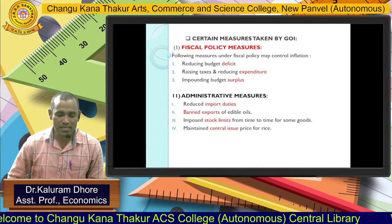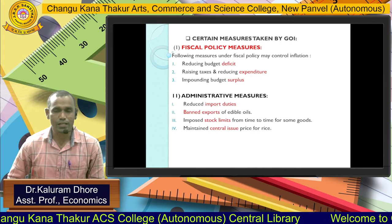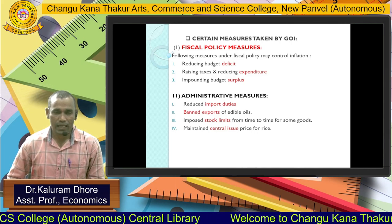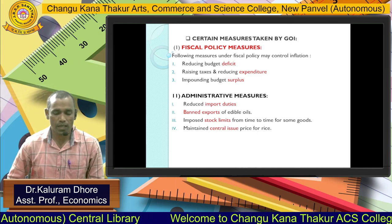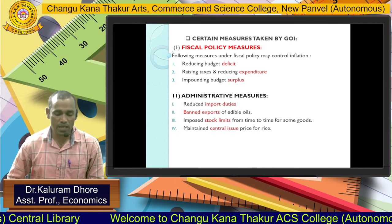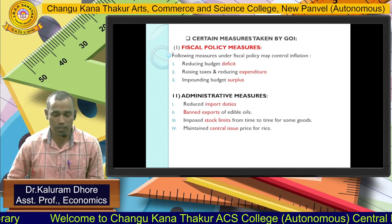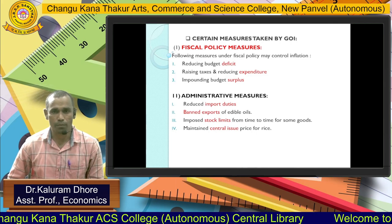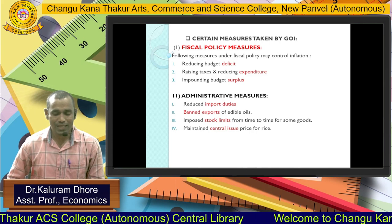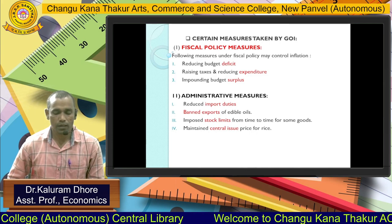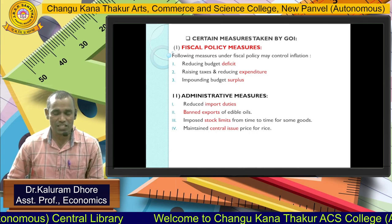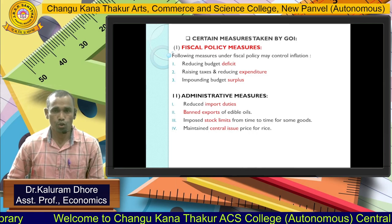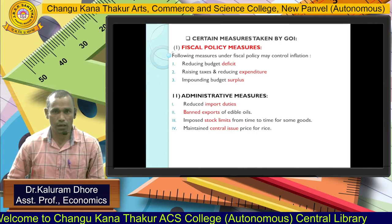Second is rising taxes and reducing expenditure. Once the government starts increasing direct and indirect taxes, they can keep control on inflation, but simultaneously they must also control their expenditure. Third is impounding budget surplus — the government can control inflation through maintaining a budget surplus. The remaining parts will be discussed in the next slide. Thank you.